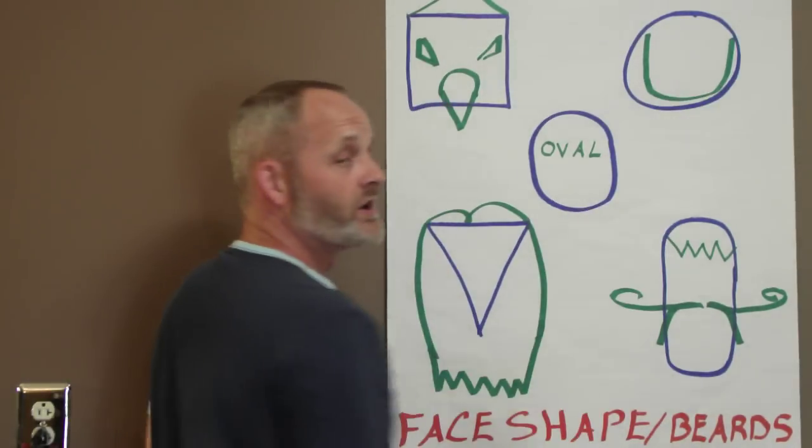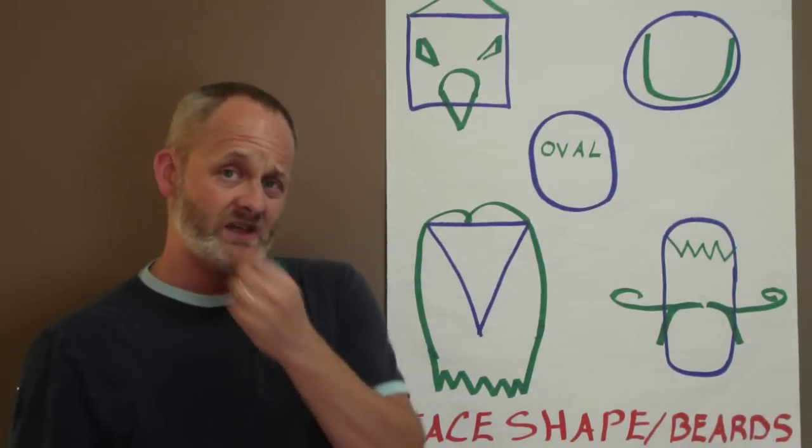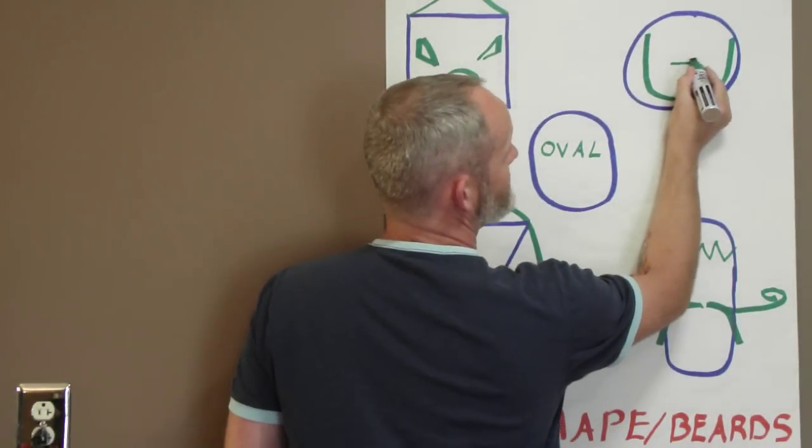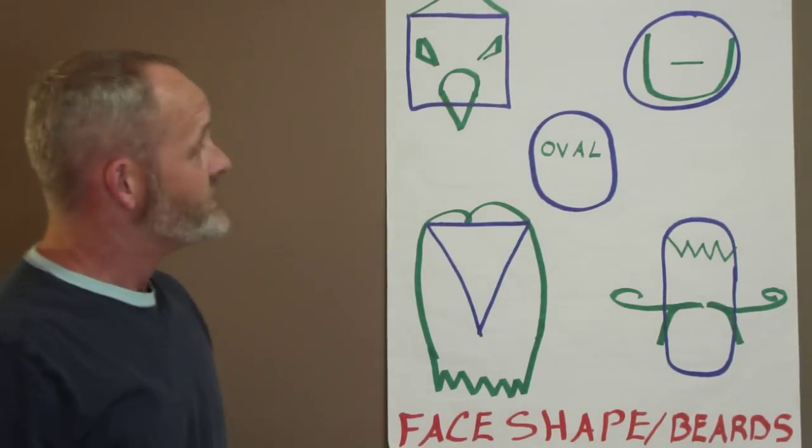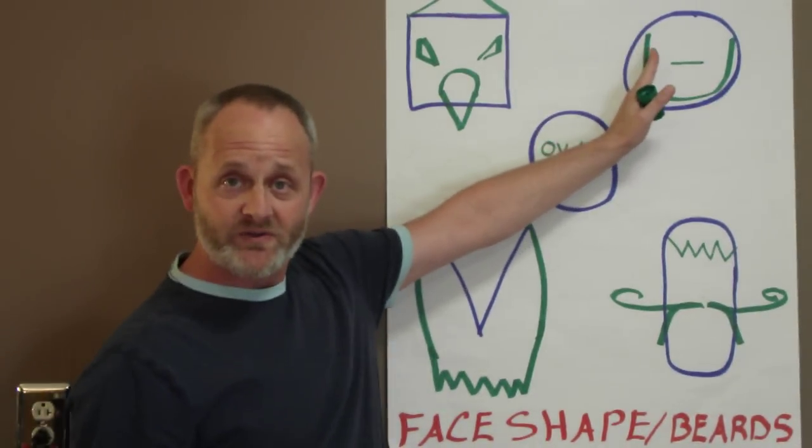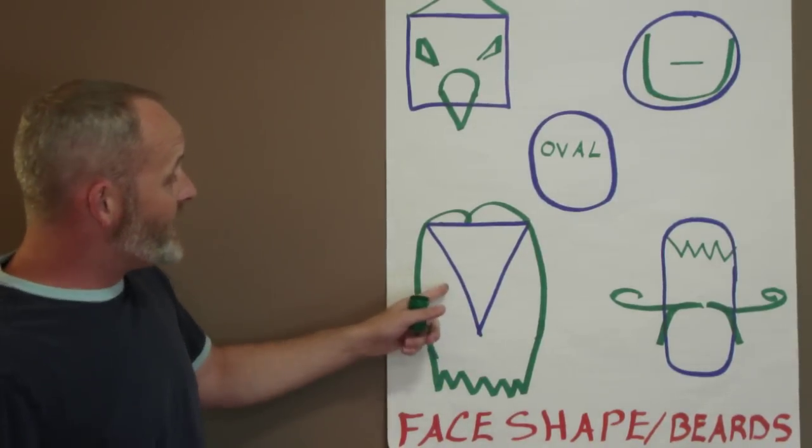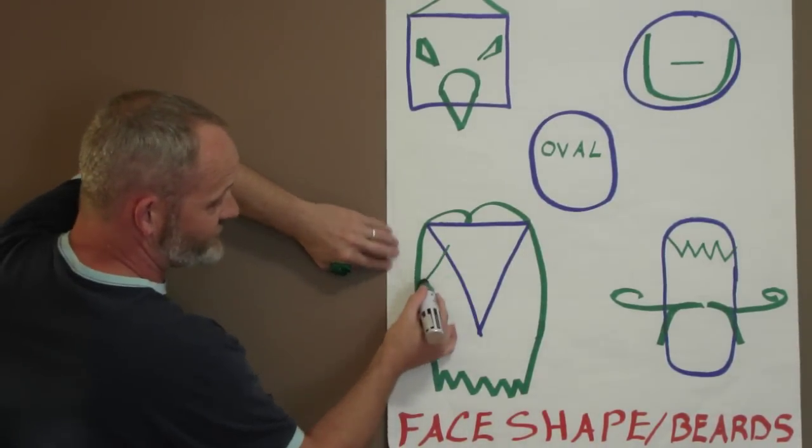As far as a mustache goes, you can do that, but you want to keep it thin. You don't want to make it real wide. Maybe like a pencil thin mustache or something of that nature. Sideburns are okay with him as long as they're not too thick. Big mutton chop sideburns on Mr. Triangle Head, yeah, that works great.